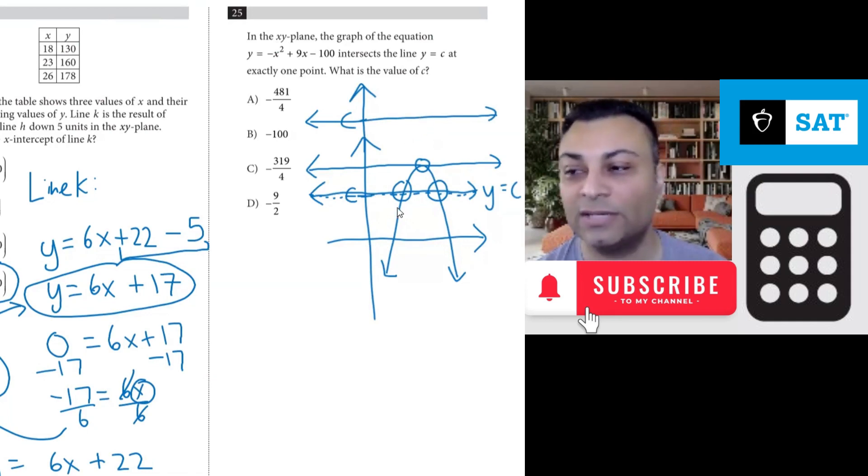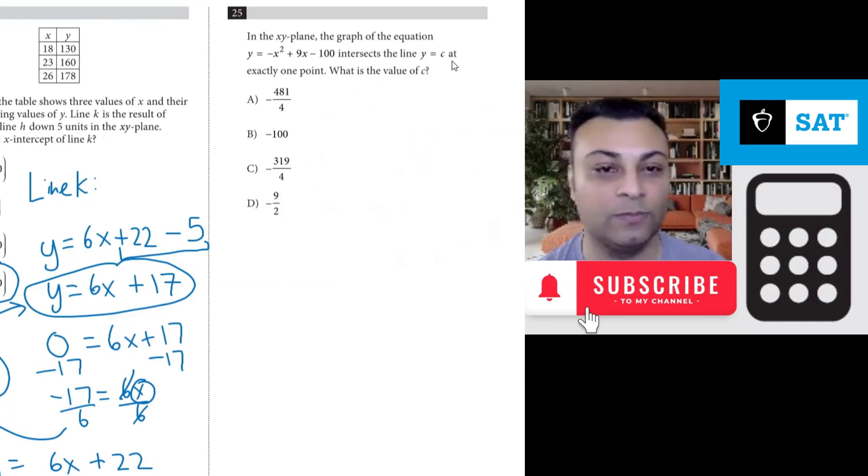So what we have is a case of one intersection point. So what we have is that this line goes through the vertex.